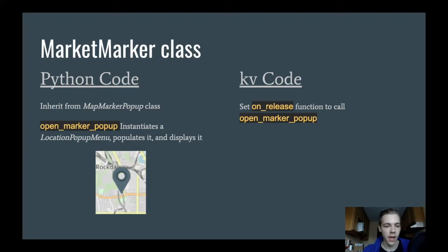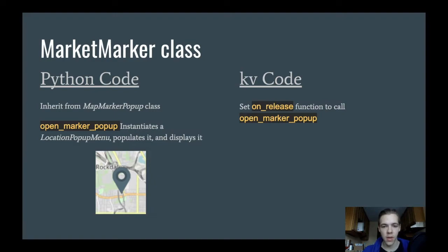The MarketMarker class is basically just that little image — there's not a whole lot going on here. It'll inherit from the MapMarkerPopup because it's just a normal popup. I'm going to define one function in Python called open_marker_popup. When you click on this marker, it'll call open_marker_popup, which basically creates that new dialogue box and populates it with all the information. The dialogue box, by the way, is going to be called the LocationPopupMenu class. In the KV code, I'll work with the on_release function, which comes with that MapMarkerPopup class. So anytime you release a click from this marker, call the open_marker_popup function.